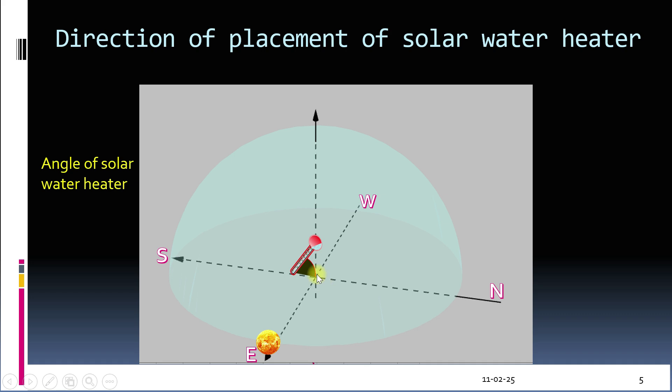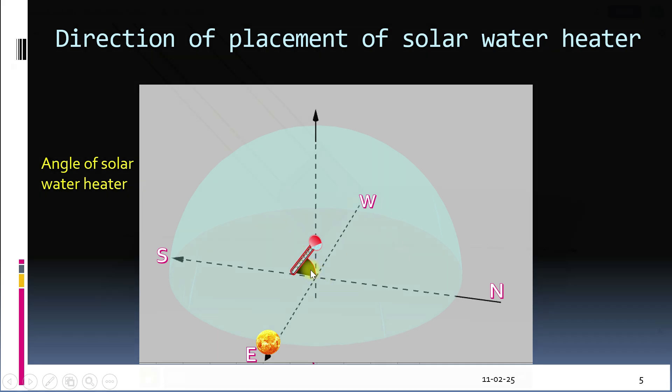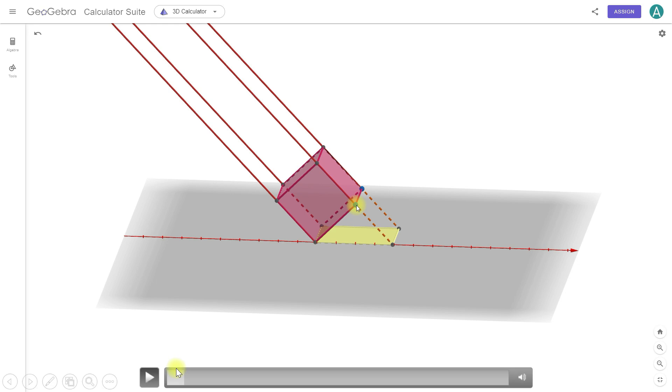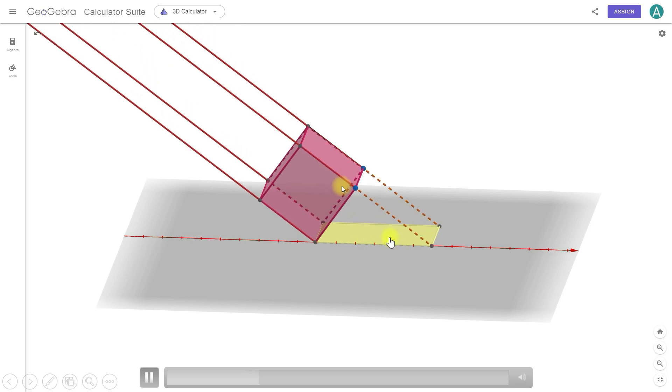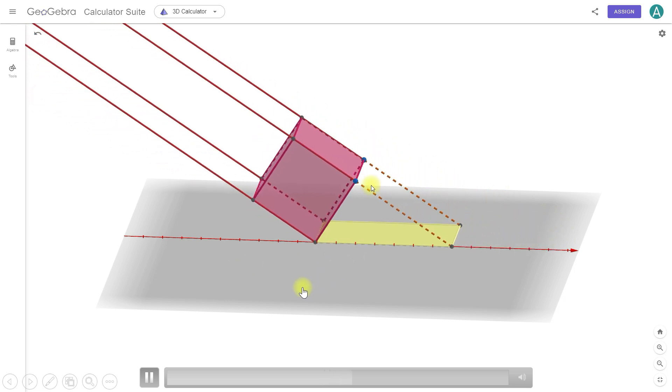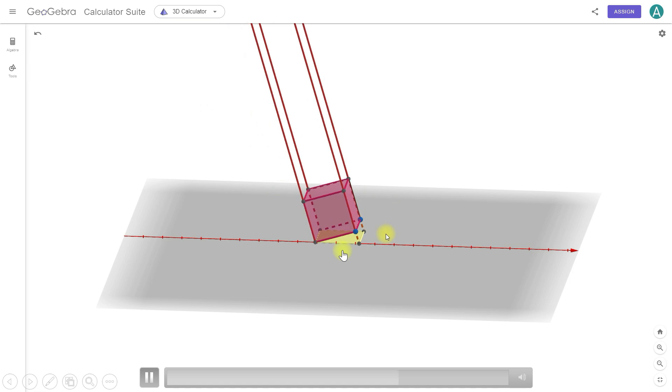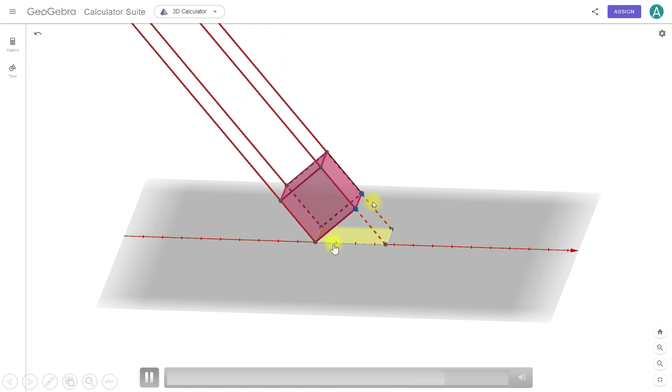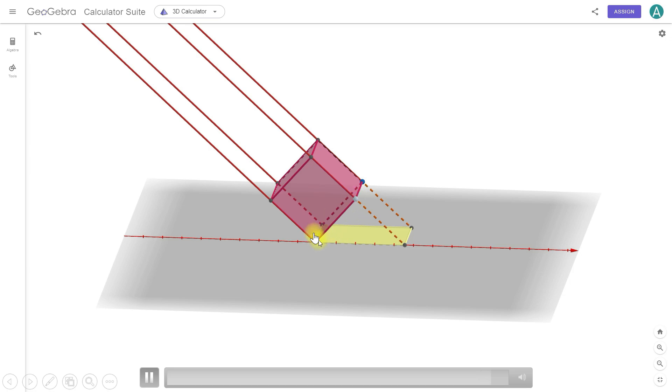But direction isn't the only factor. Angle also plays a crucial role. For maximum efficiency, the solar rays should hit the collector surface at a 90 degree angle. If rays hit at an angle greater than 90 degrees, the energy spreads over a larger area, reducing its intensity. As I adjust the angle here, you can see the illuminated area, shown in yellow, grow larger. This means the same amount of energy is spread over a bigger area, reducing the energy per unit area. So to get the most out of a solar water heater, the collector surface should always be perpendicular to the sun.